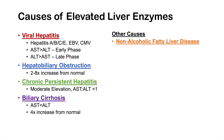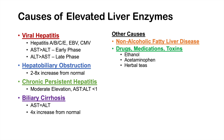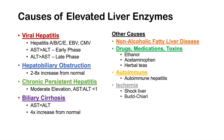Other causes include non-alcoholic fatty liver disease, which is very common in the Western world. Drugs, medications, and toxins — including ethanol, acetaminophen, herbal teas, weight loss drugs, and other medications — can also elevate liver enzymes. Autoimmune hepatitis is another cause, often leading to very high enzyme levels. Ischemic causes such as shock liver, Budd-Chiari syndrome, and infarction can also lead to very high levels, often in the thousands.